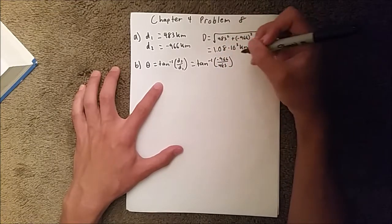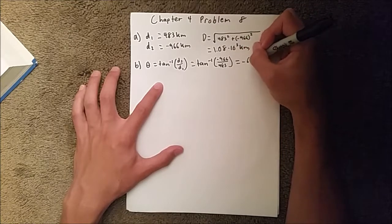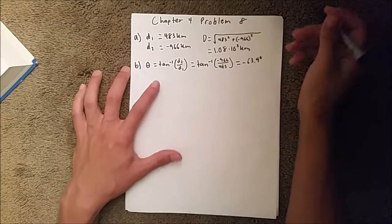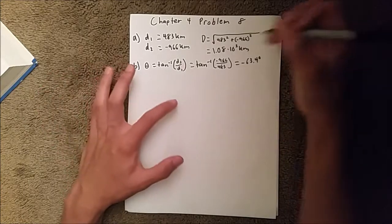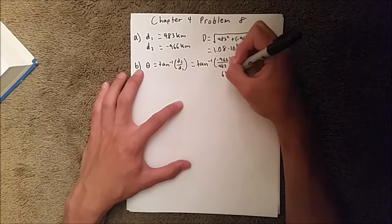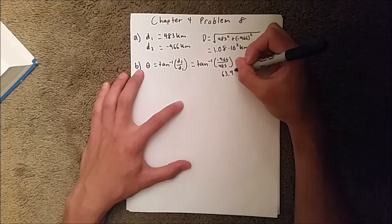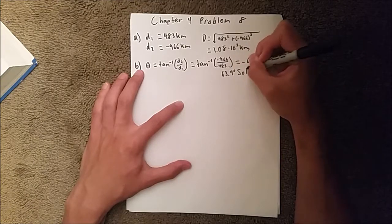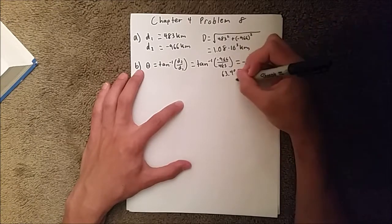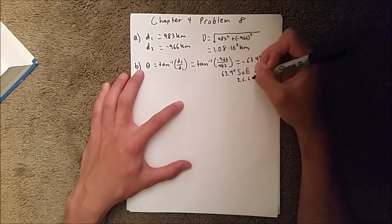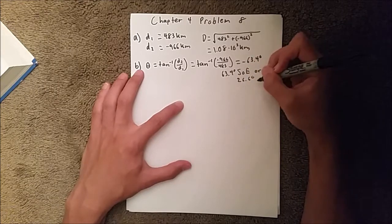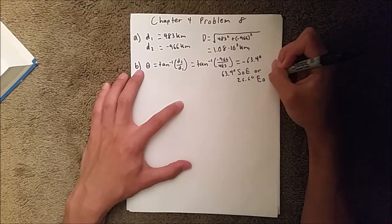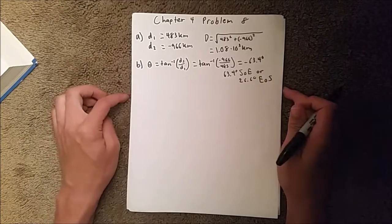And when you put that in your calculator, you should get negative 63.4 degrees. And that's from the horizontal, so that translates to 63.4 degrees south of east, or 26.6 degrees east of south. Either or would be acceptable.